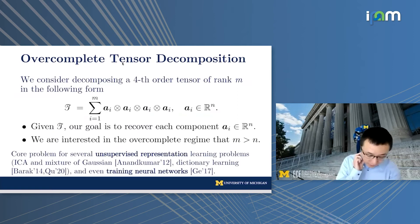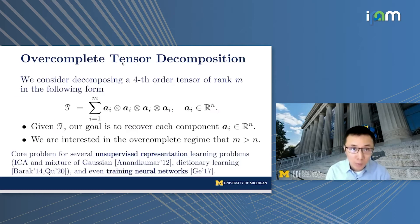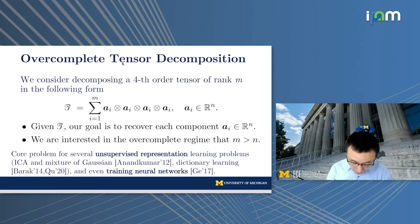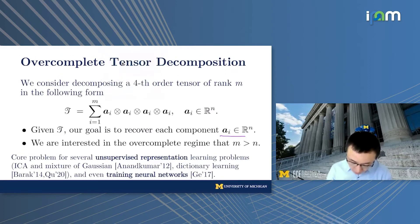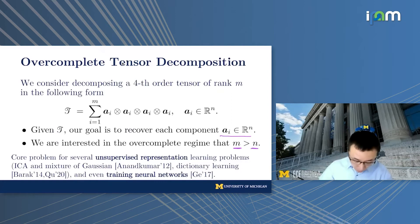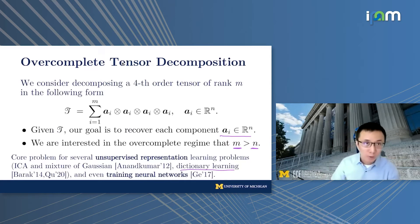The underlying problem we consider is a fourth-order tensor decomposition problem, where we have a tensor T which is a superposition of fourth-order components — the product of vectors A_i. Our goal is to find each component A_i in the over-complete regime where M, the rank of the tensor, is larger than the dimensionality N. Many supervised representation learning problems can be reduced to this over-complete tensor decomposition, such as dictionary learning problems.